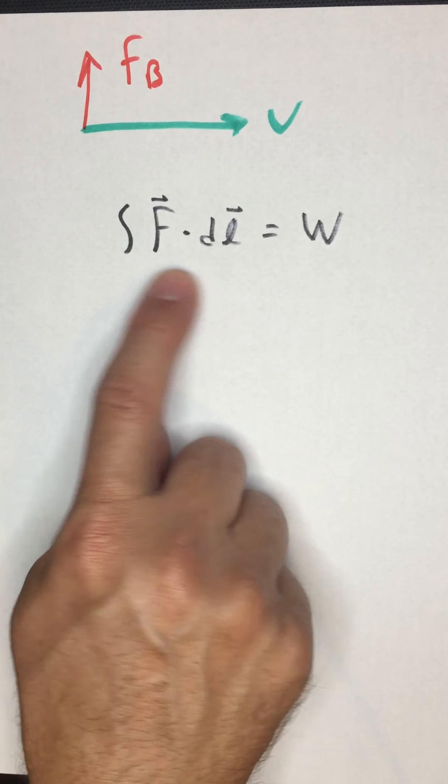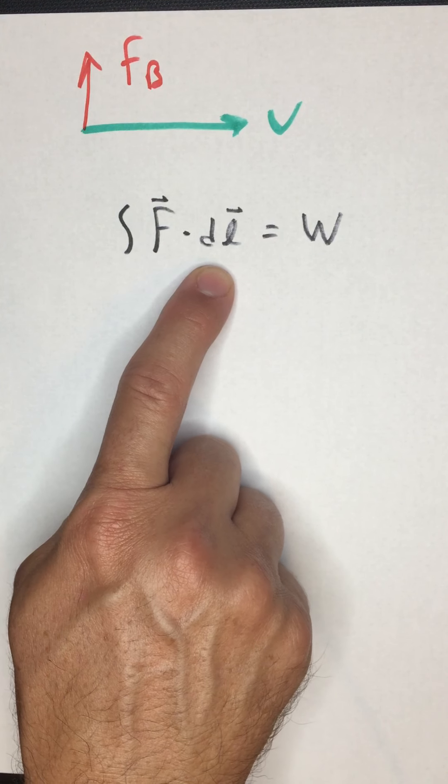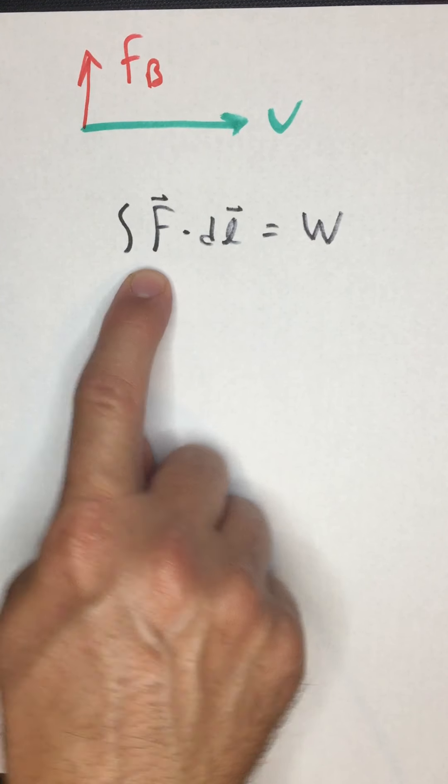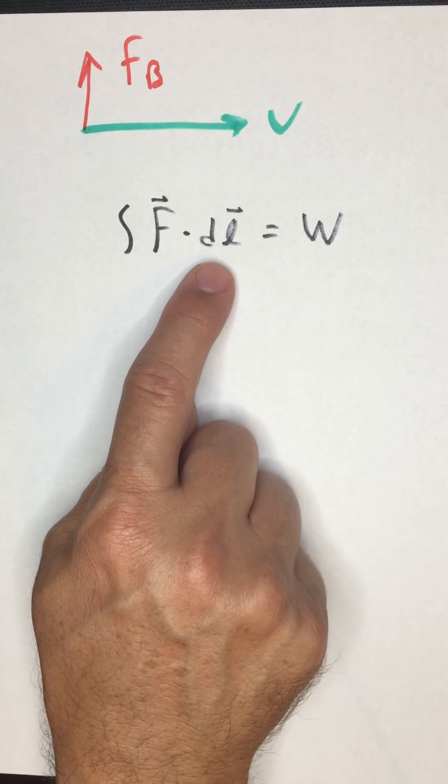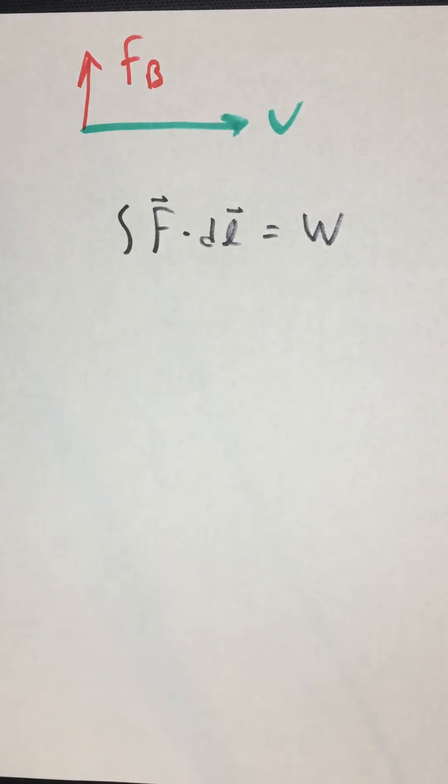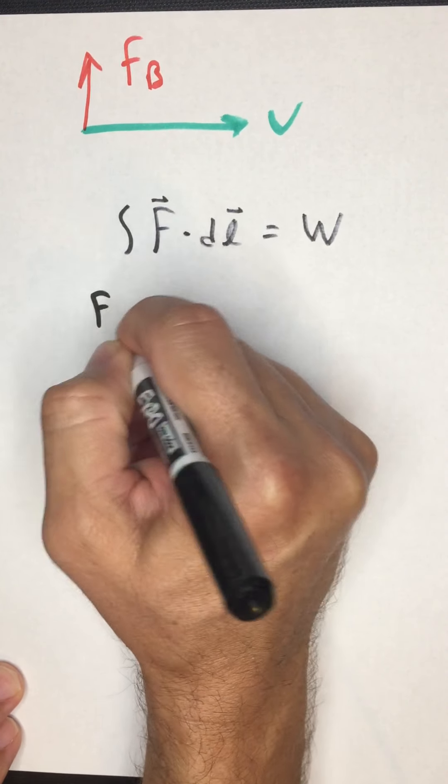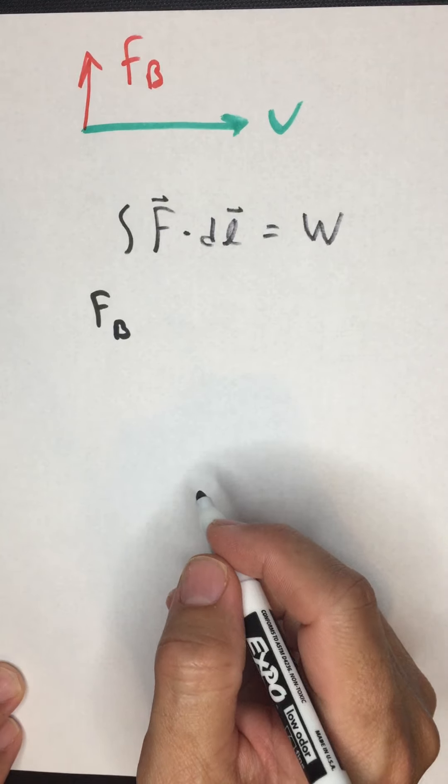So at every point along this integral, every point along DL, the force, the magnetic force is perpendicular to the displacement. What that means is that if this is the magnetic force,